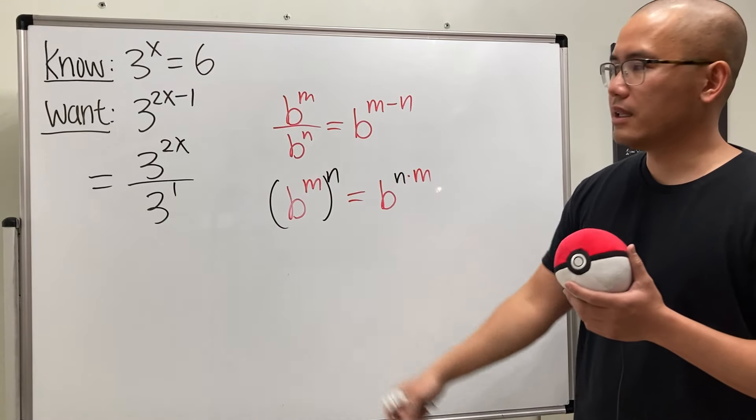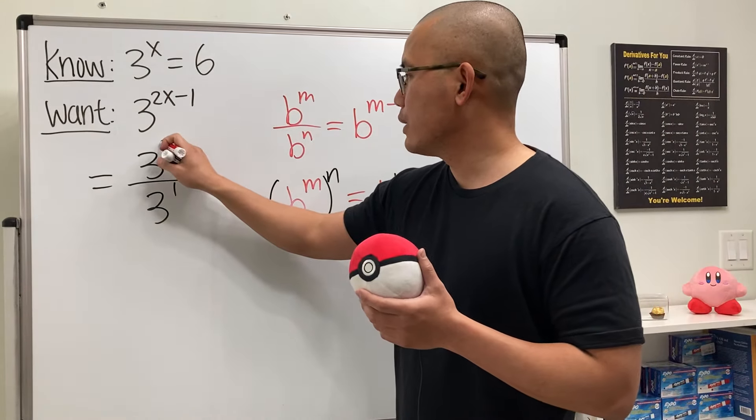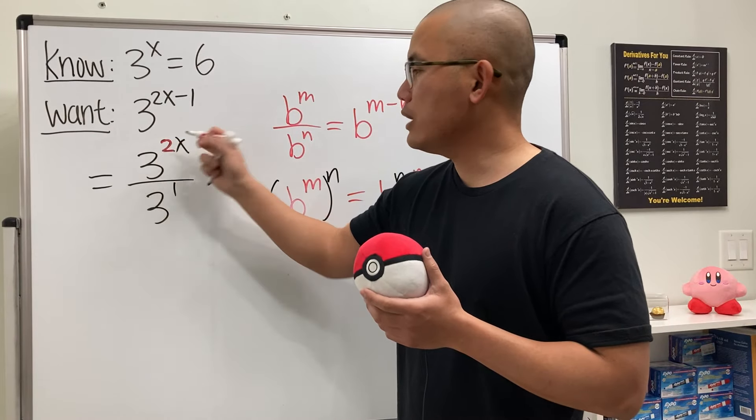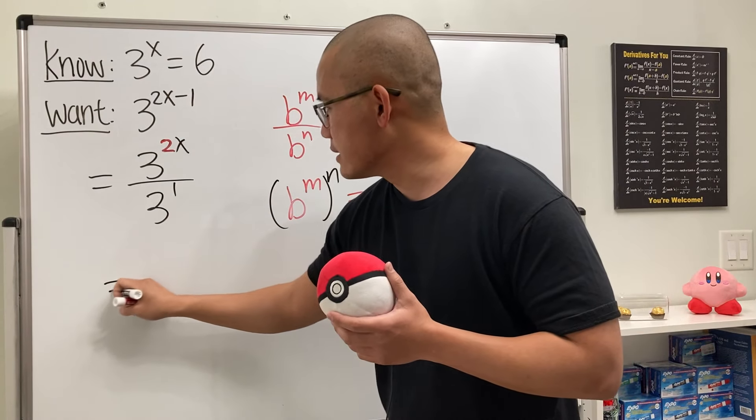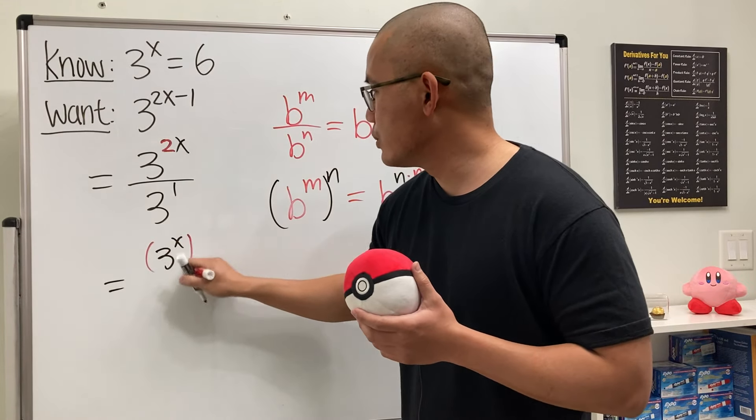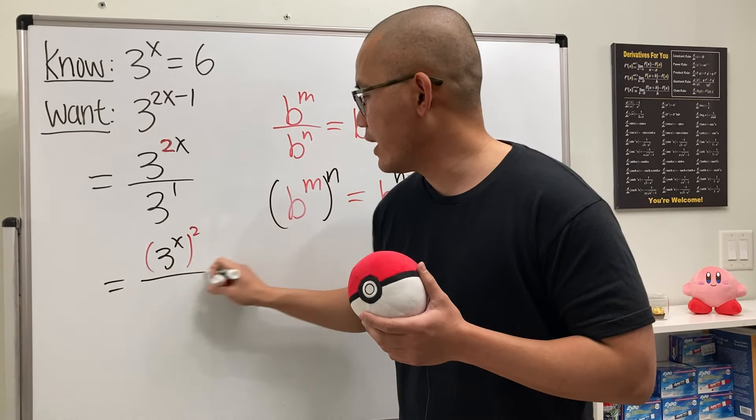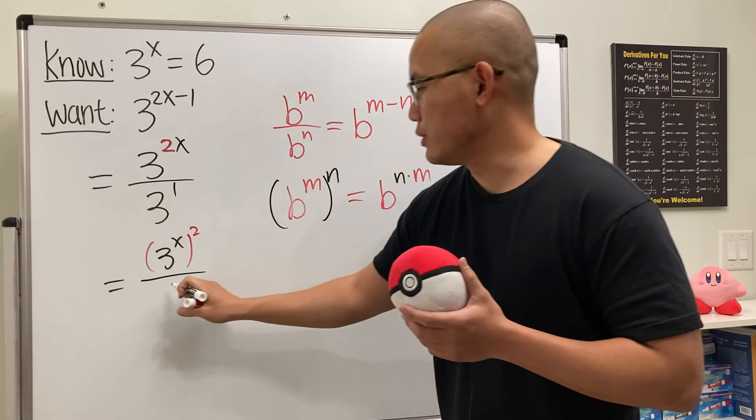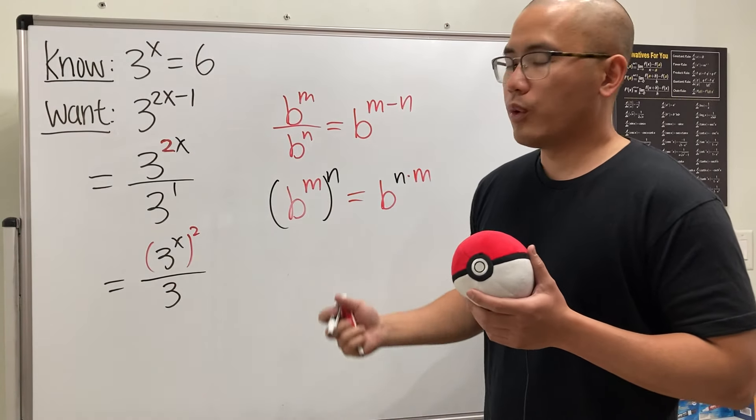And the idea is, we can look at this backwards again. Right here, we see that we have a 2. Right? 2 times x. So, we can go ahead and say, this is just 3 to the x, then raised to the 2nd power, and then divide it by 3 to the 1st power, which is just equal to 3. Okay, what good does this do?